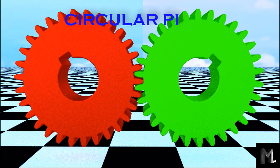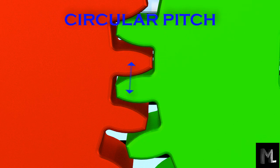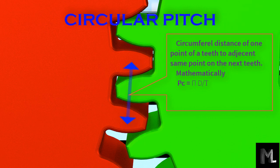Circular pitch: the circumferential distance from one point of a tooth to the corresponding point of the next tooth is called the circular pitch. It is denoted by the letter PC. Mathematically, circular pitch is equal to the perimeter of the pitch circle divided by the number of teeth.